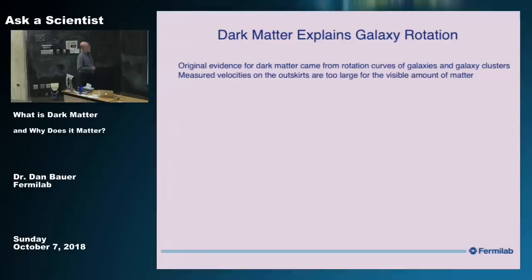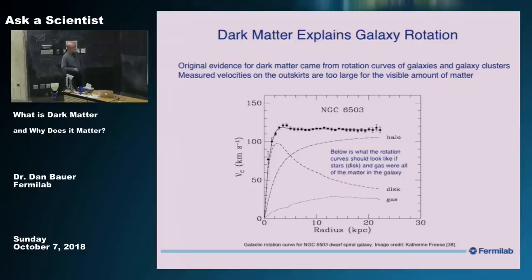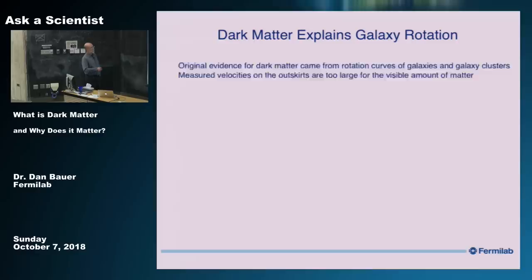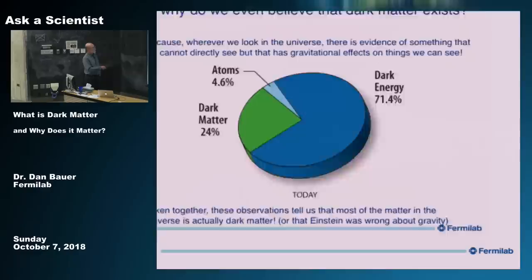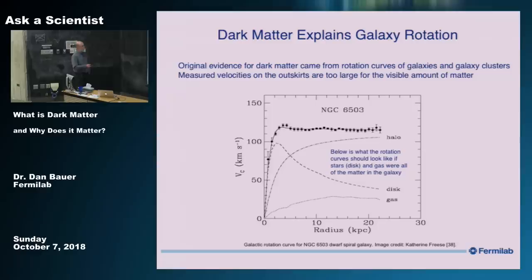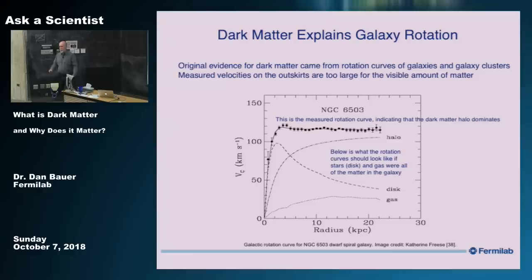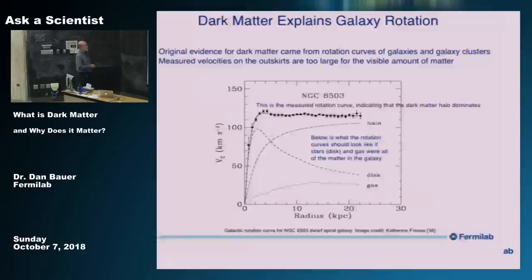Some of the original evidence for dark matter came from studying how galaxies rotate. You can measure the velocities of stars in galaxies, and what you see is a typical rotation curve. If you're only detecting the stars and gas, the speed as you go farther out from the center of the galaxy should drop off. What the data instead shows is it doesn't — it stays level all the way out to the farthest extent you can see. This tells you there's some form of matter keeping the speeds up, modeled by a thing called a halo — that's what a big sphere of dark matter would do.